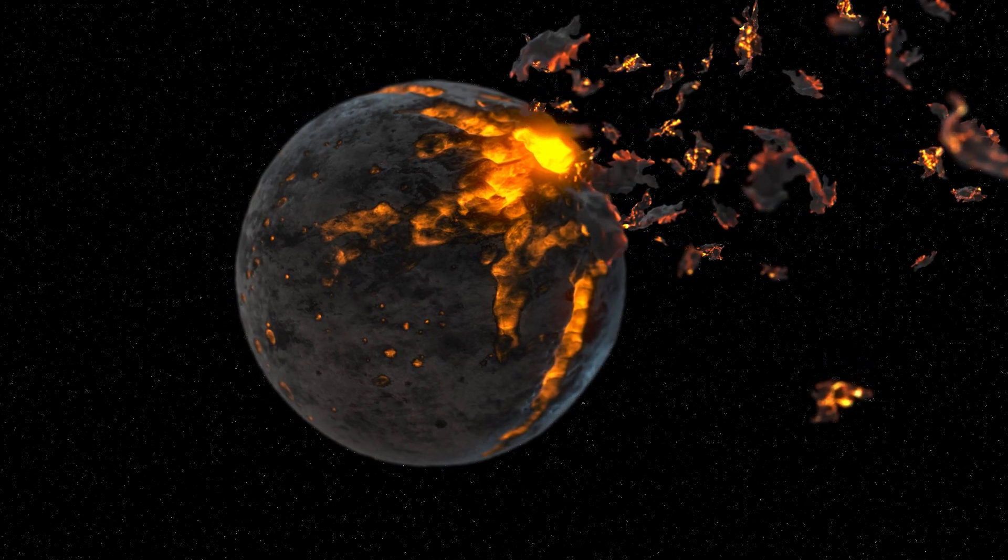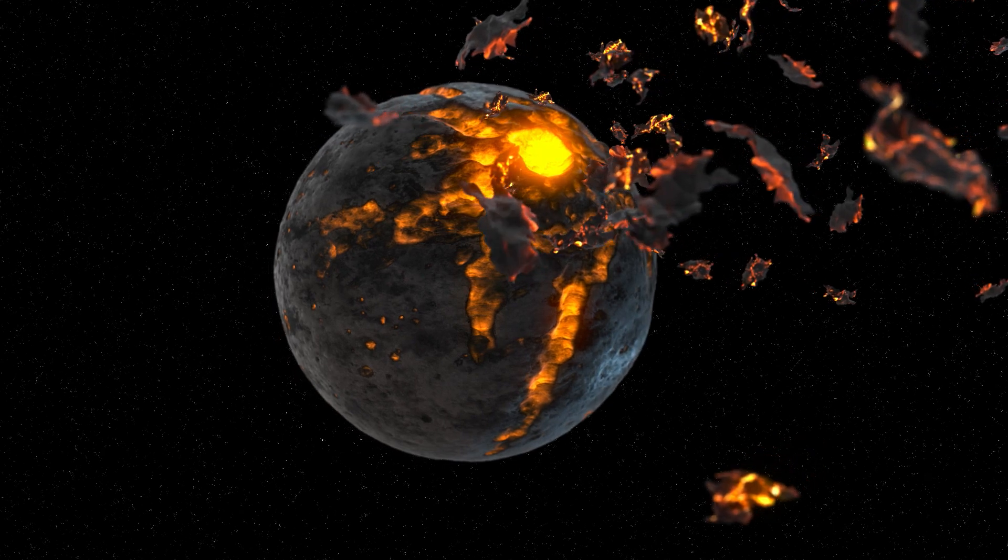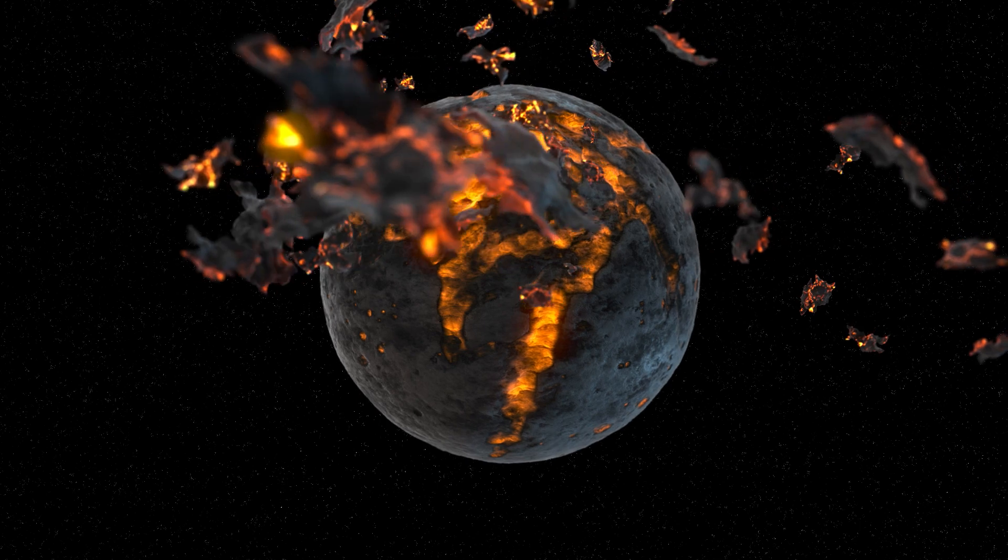It turned out that if the planet is in the cooling phase, the most massive extinctions occur when the average temperature drops by about 7 degrees Celsius. However, when the Earth warms up, they occur when the temperature rises by 9 degrees Celsius.